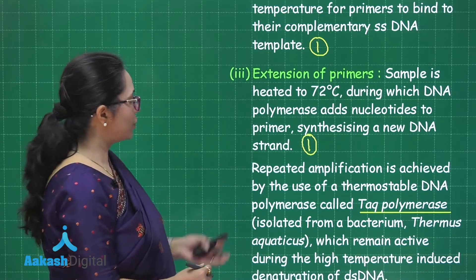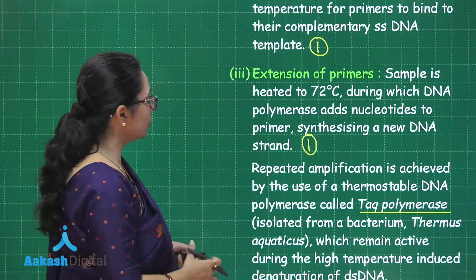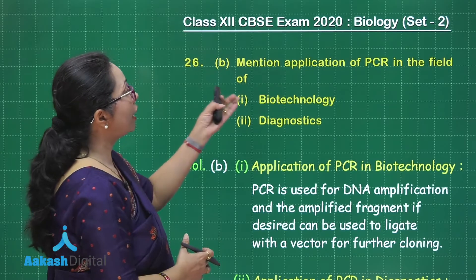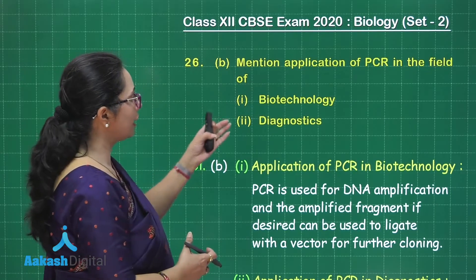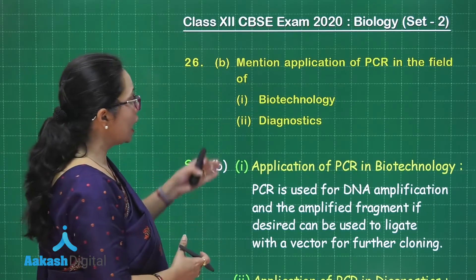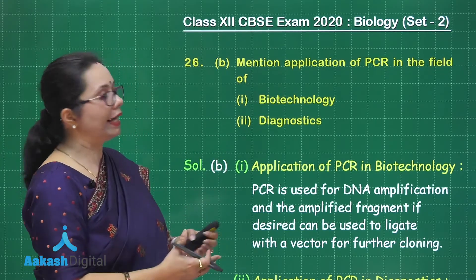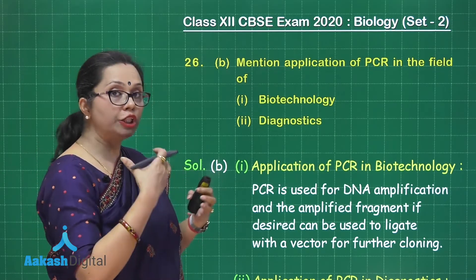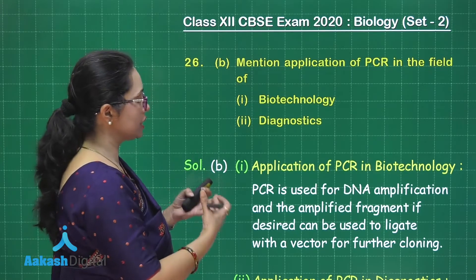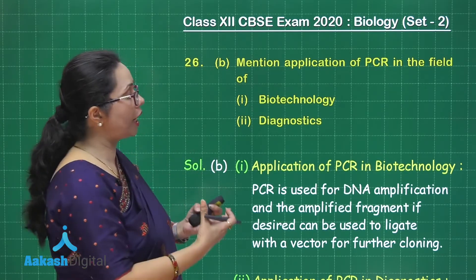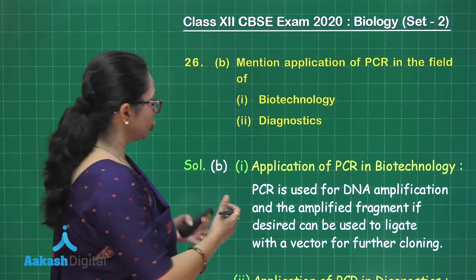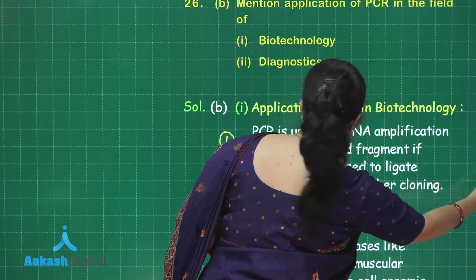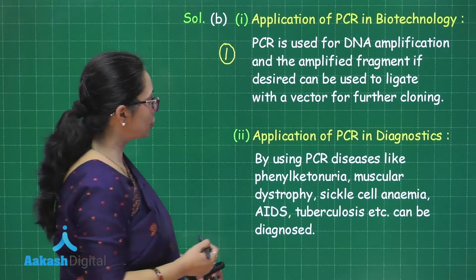The source of Taq polymerase is the thermophilic bacterium Thermus aquaticus. For PCR's application in biotechnology: it is used for DNA amplification — when we have a DNA of interest and need multiple copies, PCR can quickly clone that target DNA in very little time. This is worth one mark.